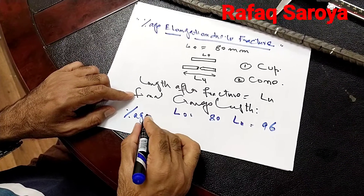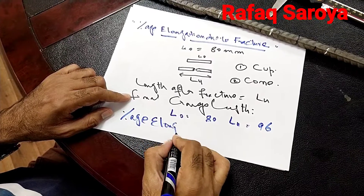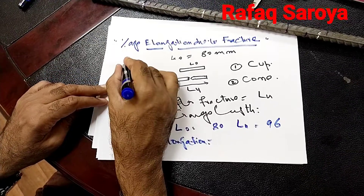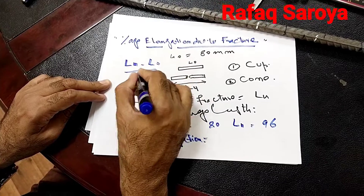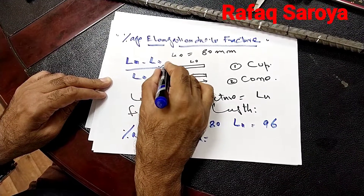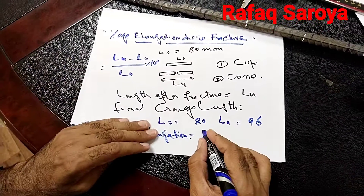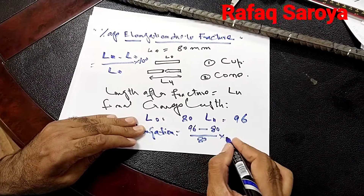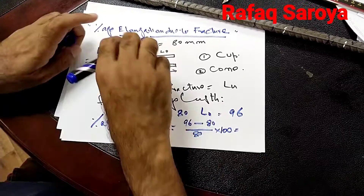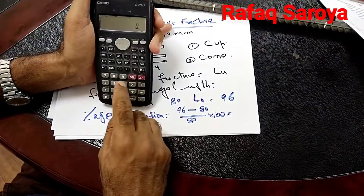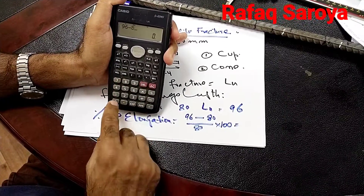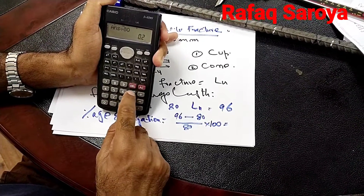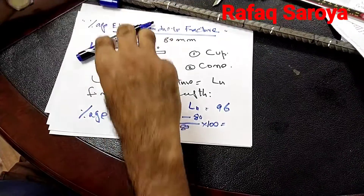I have to find out the percentage elongation. As per the formula: (LU minus L0) over L0, multiplied by 100. Putting in the values: (96 minus 80) over 80, into 100 — that is the change of length divided by the original length, multiplied by 100. It comes out to be 20%.